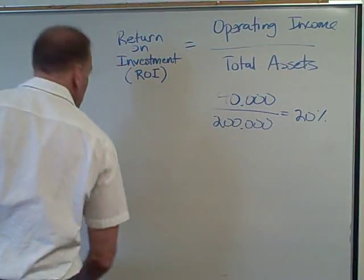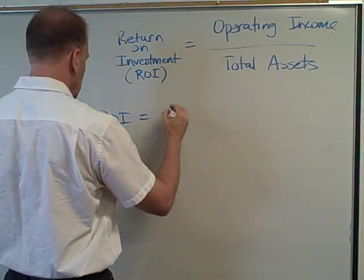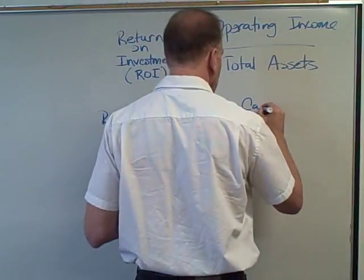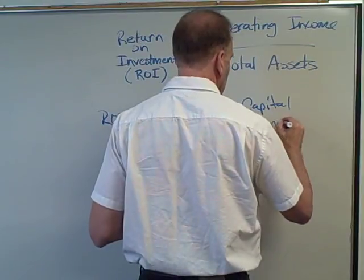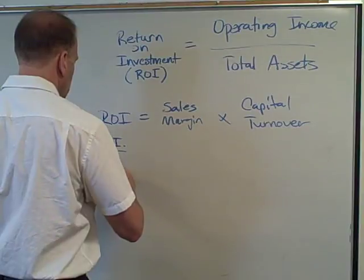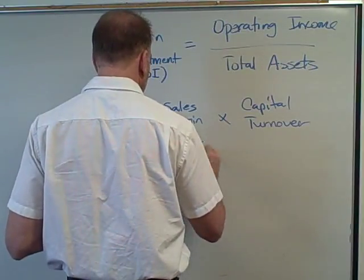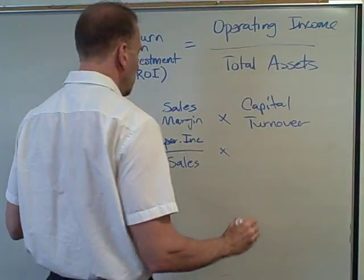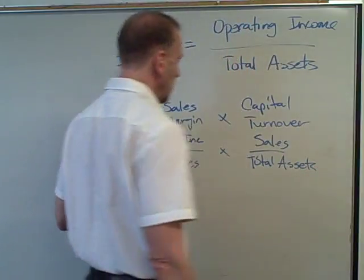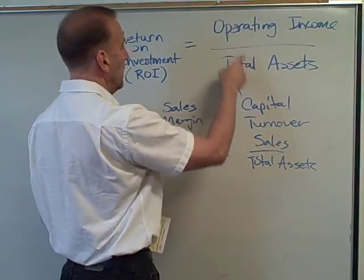What we've done is broken this return on investment down so we can further evaluate how they're doing. ROI can be broken down into our sales margin ratio times our capital turnover. Remember, return on investment is operating income divided by total assets. If we add the sales figure into both ratios, sales would be eliminated and we're left with operating income divided by total assets, which is our ROI.